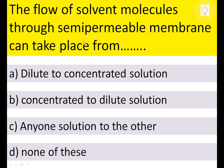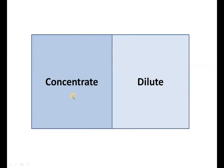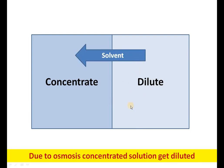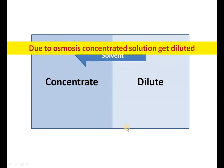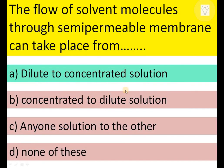The flow of solvent molecules through a semi-permeable membrane can take place from dilute to concentrated solution, concentrated to dilute, any solution to the other, or none of these. Solvent molecules flow from the dilute solution to the concentrated solution — the dilute side decreases in concentration and the concentrated side becomes more dilute. Therefore, A is the correct answer — dilute to concentrated solution.